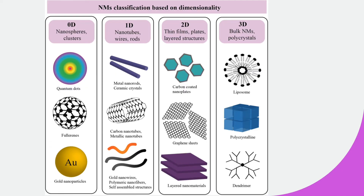Moving on towards 3D materials, in the 3D case all dimensions are out of the nanometer range. These are still nanomaterials but with all dimensions beyond the nanometer range. Examples include bulk nanomaterials, polycrystals, dendrimers, and liposomes. So all of these represent the nanomaterial classification based on dimensionality.